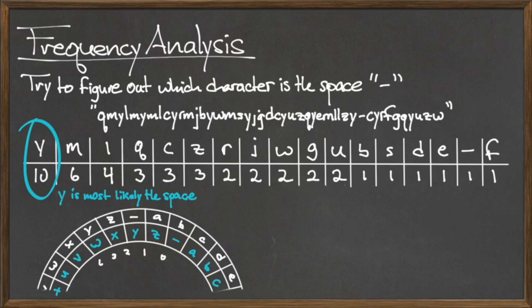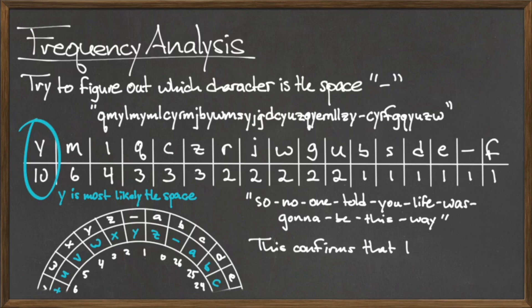Using this Caesar cipher, Eve is able to construct her own decoder disk and decipher the original plaintext phrase: So, no one told you life was gonna be this way.